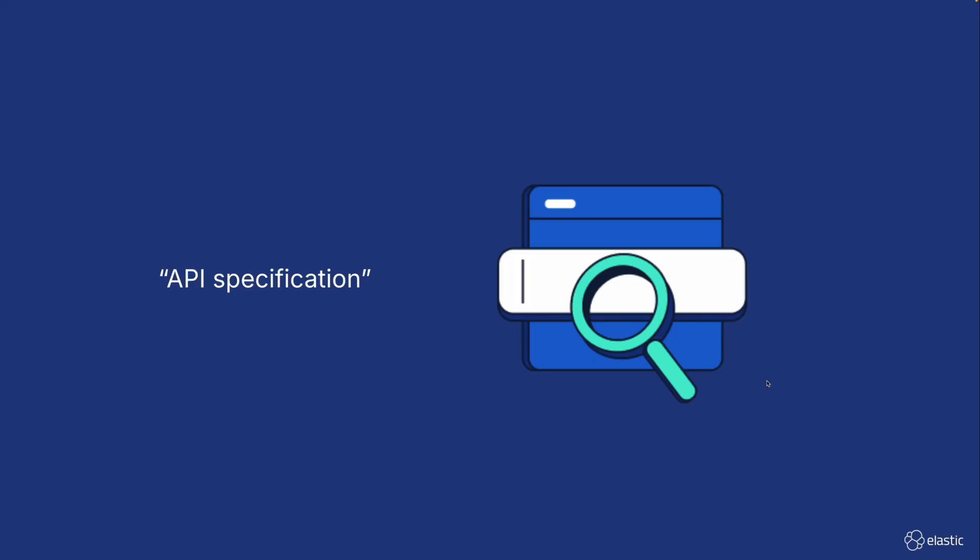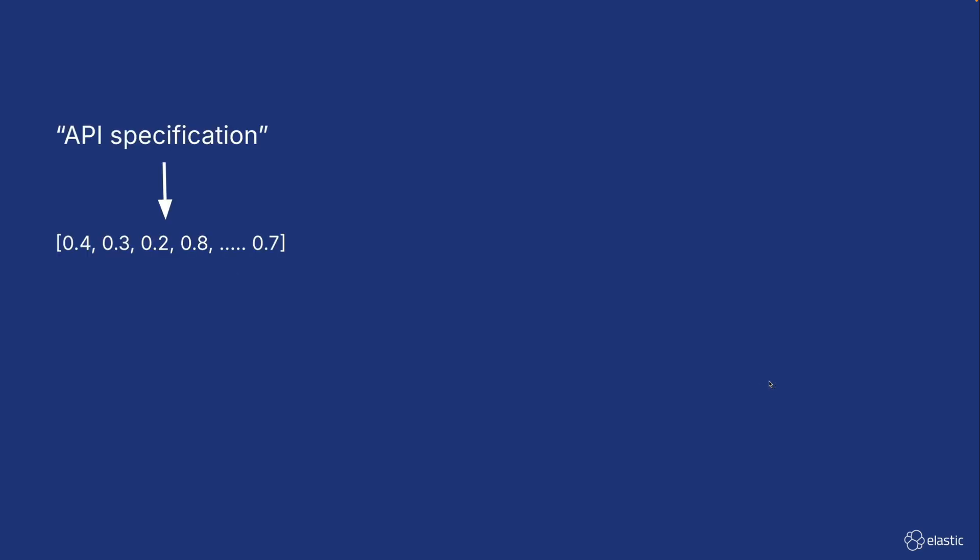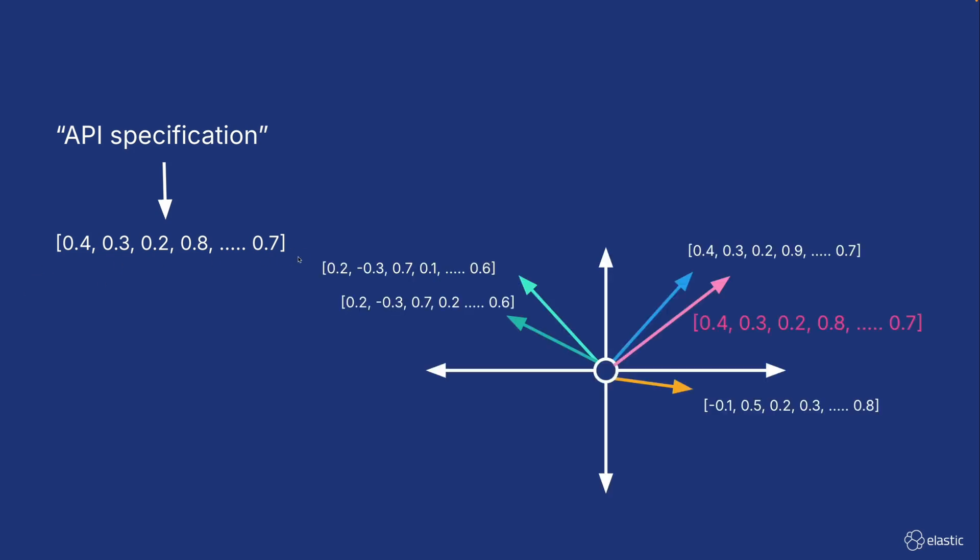To put this in action, when we look for something new, like API specification, we first use the same model that generated all the other embeddings to also turn this text into a vector, so we can plot it in the same vector space. From here, it's a lot easier to retrieve the closest neighbors, which will be the most similar other chunks.